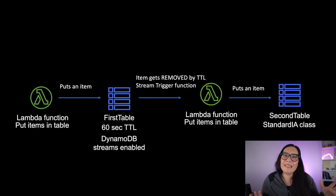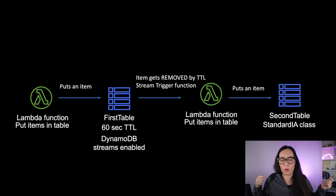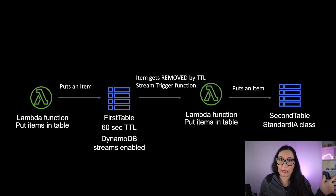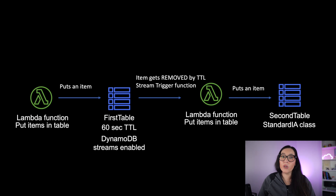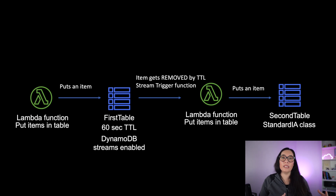This example simulates that Instagram-like application — just the backend, no actual Instagram. We have two tables: table one and table two. The first table holds all our current data. A Lambda function saves data into that table. The interesting thing about table one is that it has a TTL — Time To Live — which is a DynamoDB feature where you set how long an item lives in the table. Each item can have a different TTL, configured when you upload it.